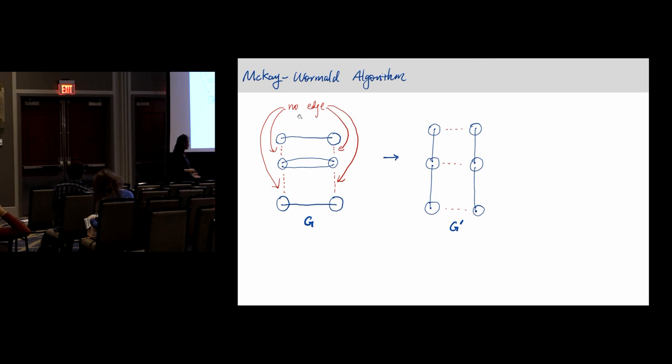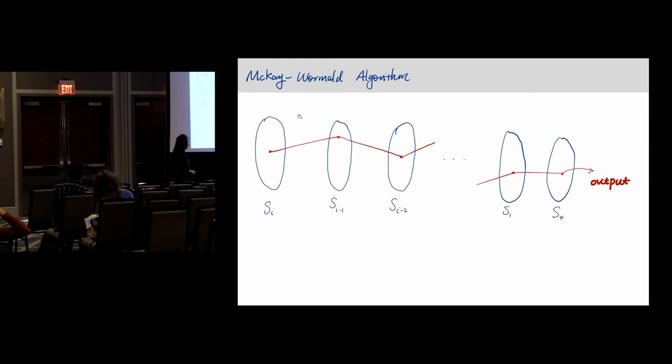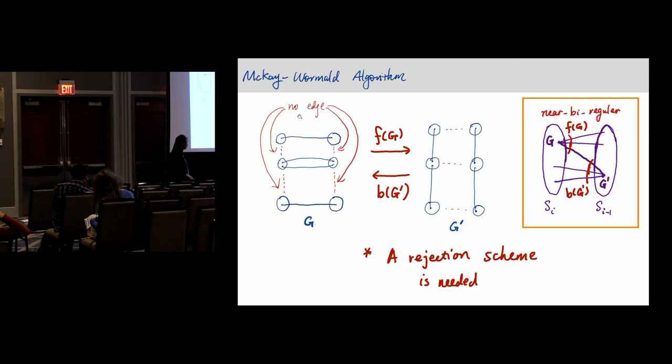This operation doesn't change the degree sequence, so you're still in your sample space and it removes the double edge. The algorithm just keeps doing this until you get a simple graph. So here you get S_i, the graphs that have i double edges, and you keep removing the double edges until you become simple, and then you output. Of course, one natural question is, we can do that but is it still uniformly distributed when you output? There's some kind of distortion.